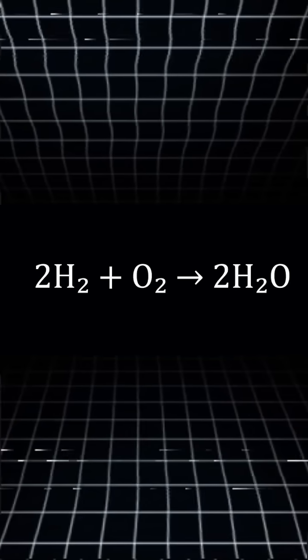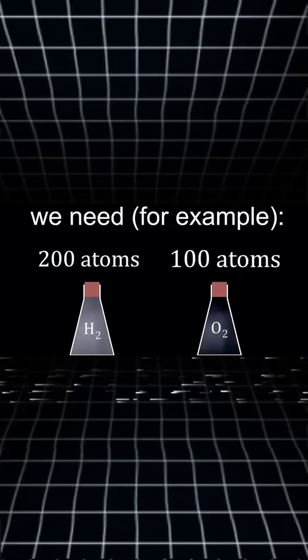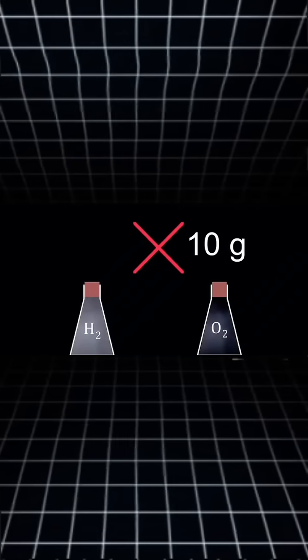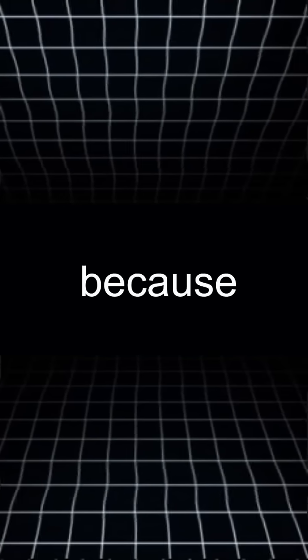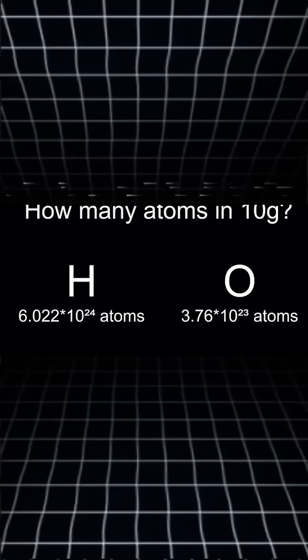Okay, but if you wanted to make this reaction happen in a lab, how would we know that we have exactly twice the amount of hydrogen compared to oxygen? You can't just take 10 grams of this and mix it with 20 grams of that because the atoms don't weigh the same, so 10 grams of both contain a different amount of particles.